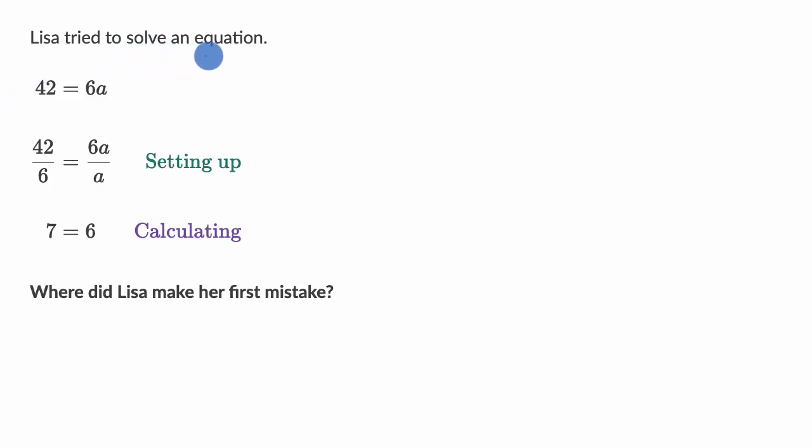We're told that Lisa tried to solve an equation. 42 is equal to 6a, or six times a. And then we can see her steps here. And they say, where did Lisa make her first mistake?